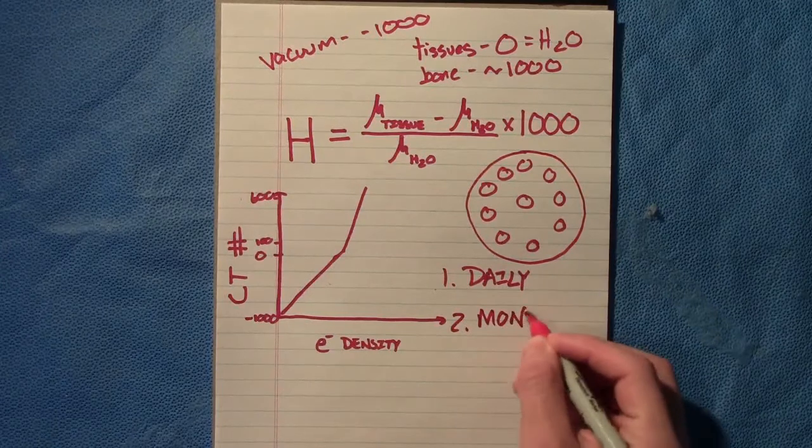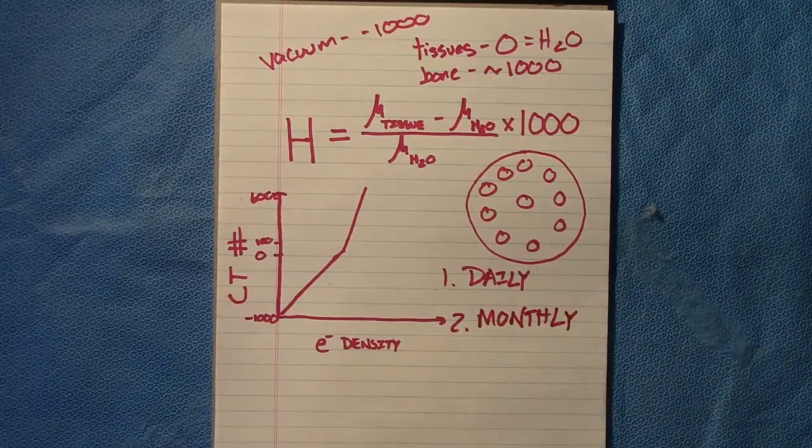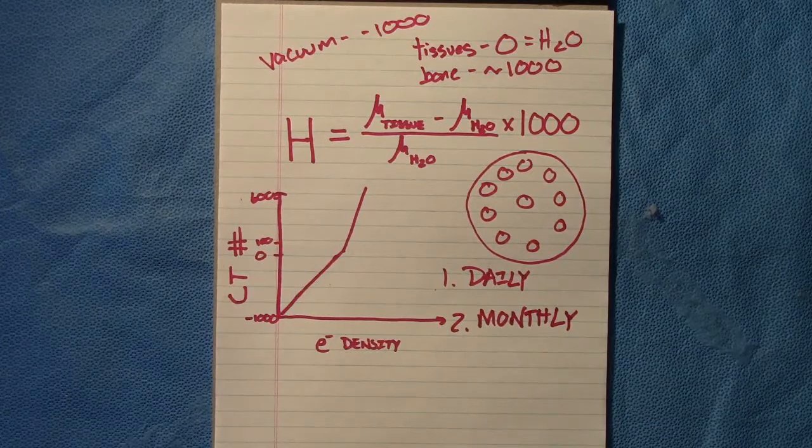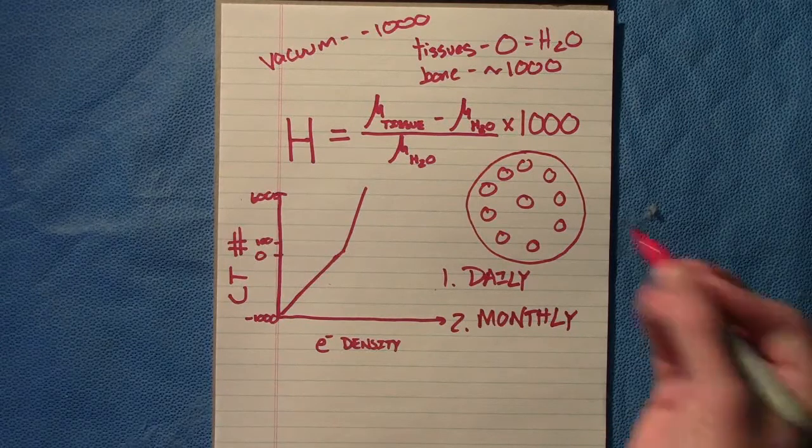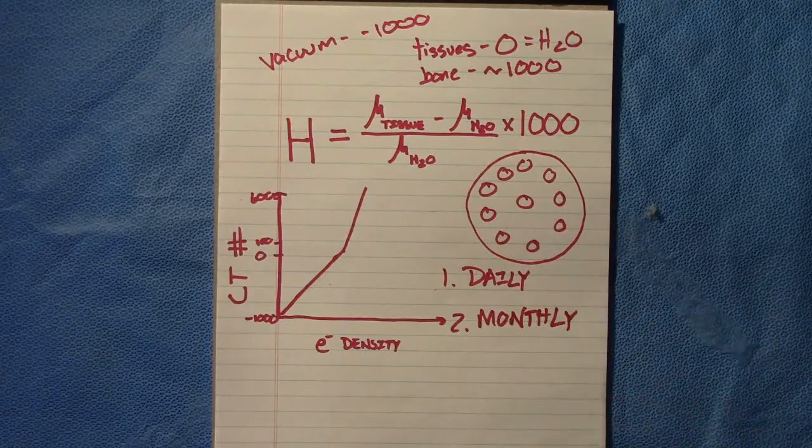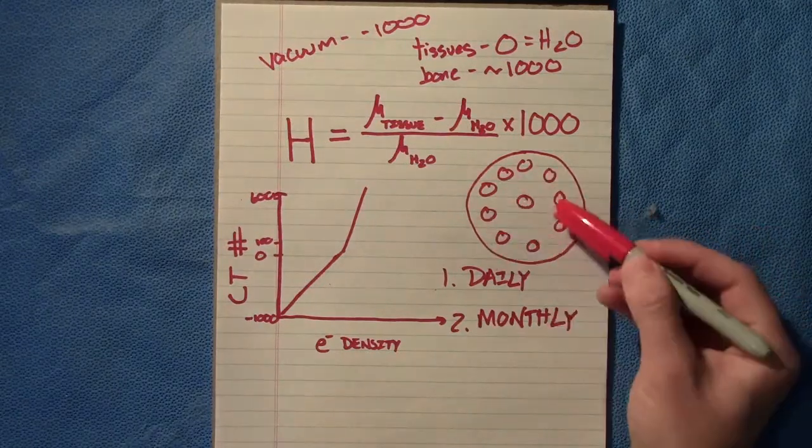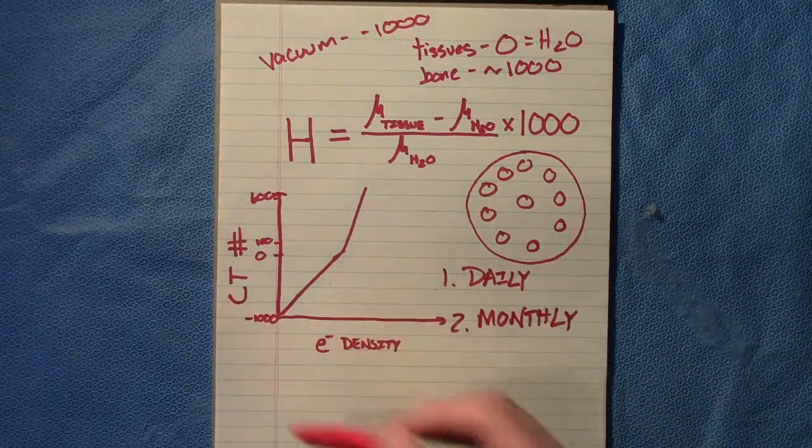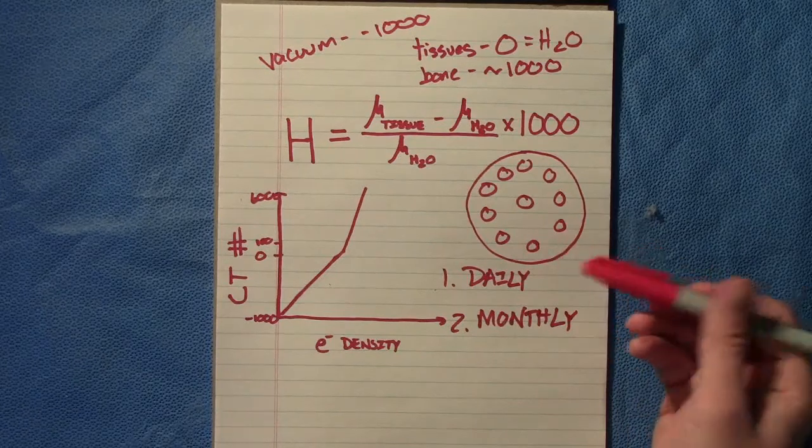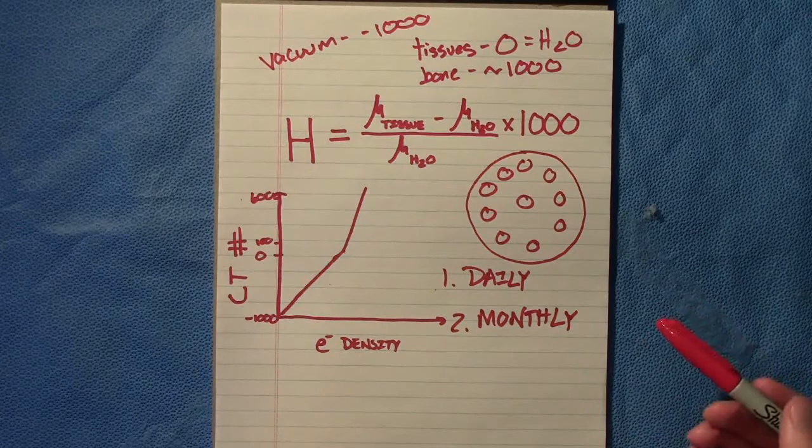Second, we also do a monthly, and that is a more exhaustive daily QA essentially. We scan a phantom, we import it into the treatment planning system, we verify that the CT number for water is zero plus or minus 10, acrylic, PMMA, bone—all these things. We verify that the treatment planning system and the CT are assigning that correct CT number to a certain range, because CTs over time potentially may read it differently. They're complex machines, and you may need service if it's starting to drift for CT numbers.